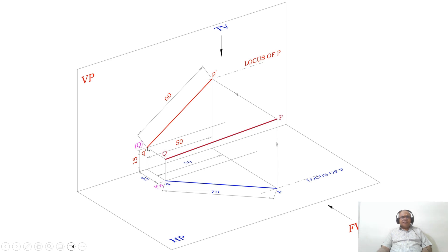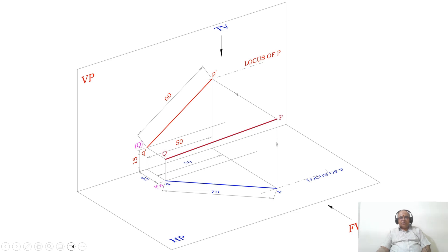The front view is 60 mm. The front view means the image will be on the vertical plane. From Q dash, you measure a distance of 60 and cut an arc on this end projector line, so you get P dash. Similarly, on this end projector line with Q as center, take the radius of 70 and cut an arc, so you get P.